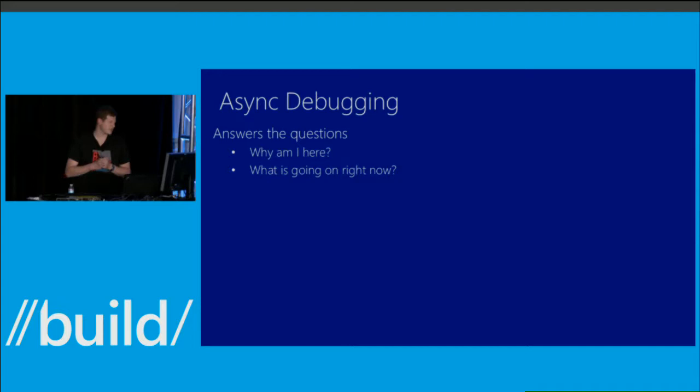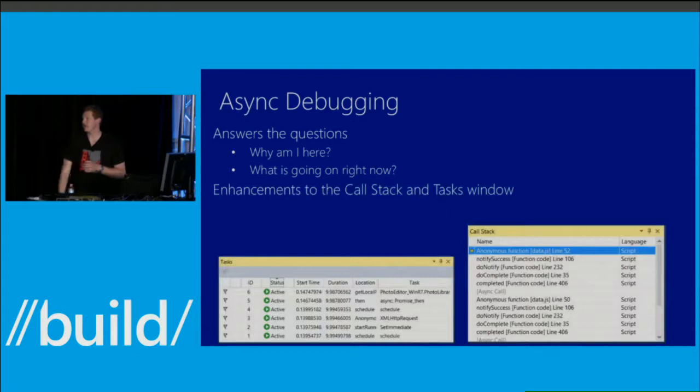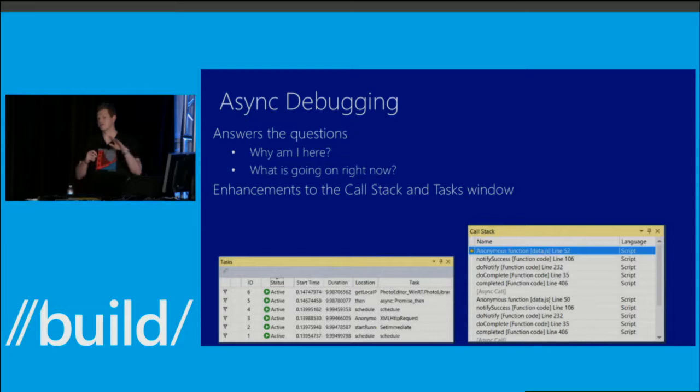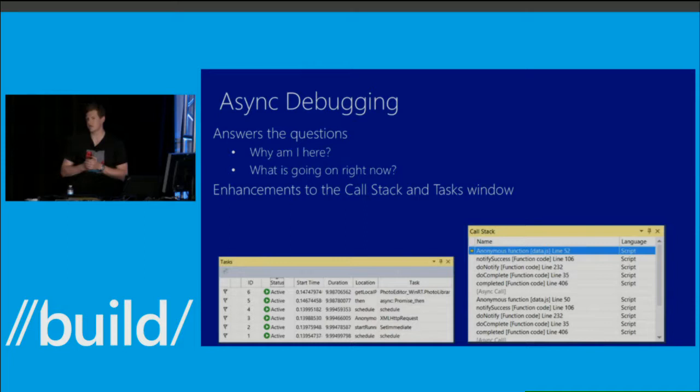The first thing I want to talk about is the new async debugging functionality added in Visual Studio. Async debugging aims to answer the questions: why am I here, and what is going on right now? We've done that by enhancing the call stack window and the tasks window. How many people here have done any task-based programming in Visual Studio before, either in C# or C++? So this window was formally called the parallel tasks window. It's been renamed 'Tasks' — it's not called parallel tasks anymore in the 2013 preview.